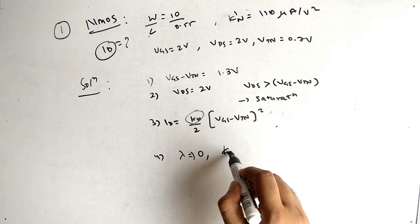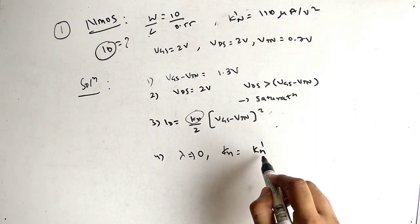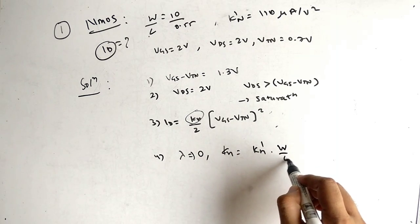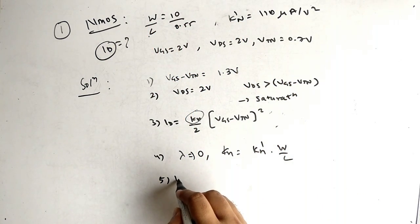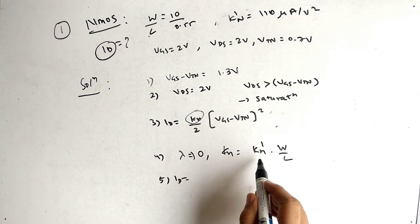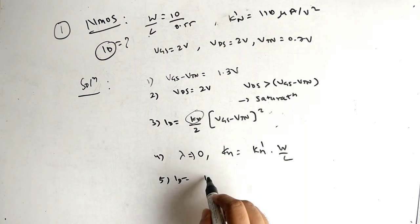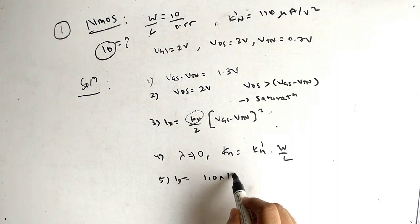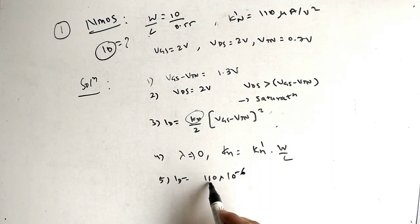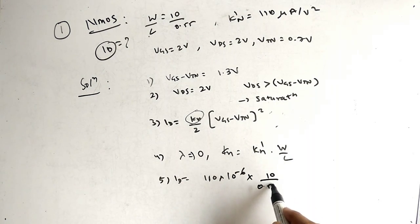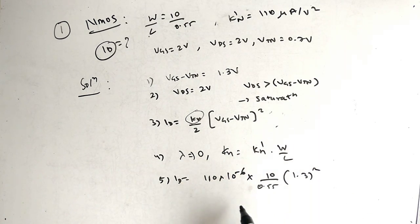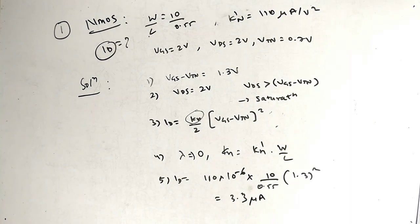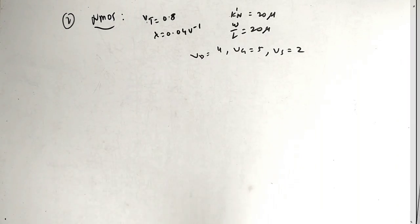KN = K'N × (W/L). Substituting: KN = K'N × (10/0.5), then ID = (KN/2) × (1.3)². The answer is 3.3 µA.